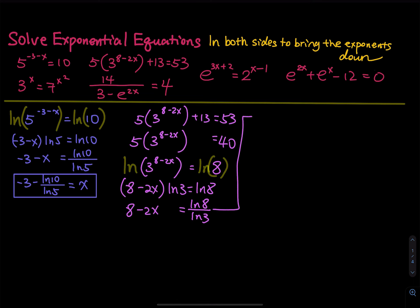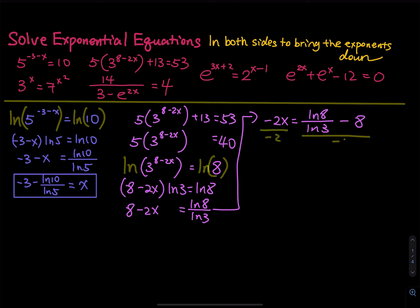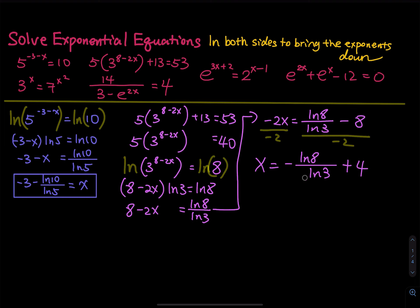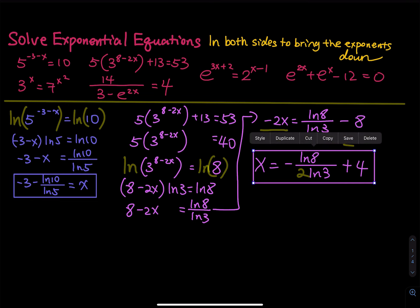Subtracting 8 on both sides gives negative 2x equals to ln8 divided by ln3 minus 8. Dividing both sides by negative 2, the answer is negative ln8 over 2ln3 plus 4. I always report the exact answer — I don't really like rounding the final answer.